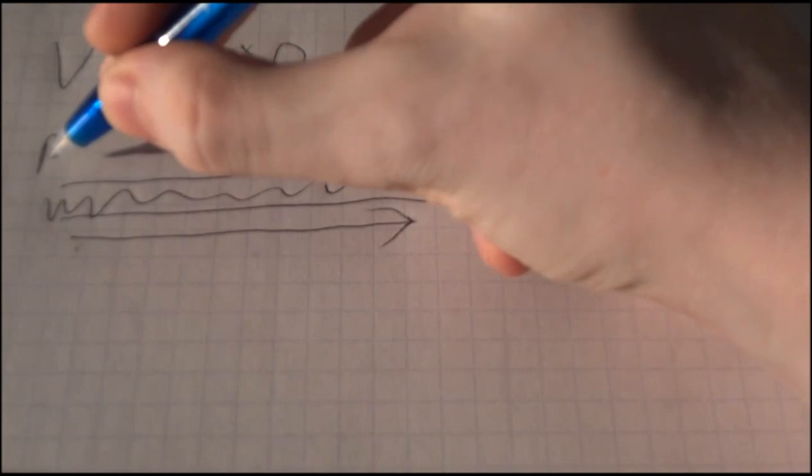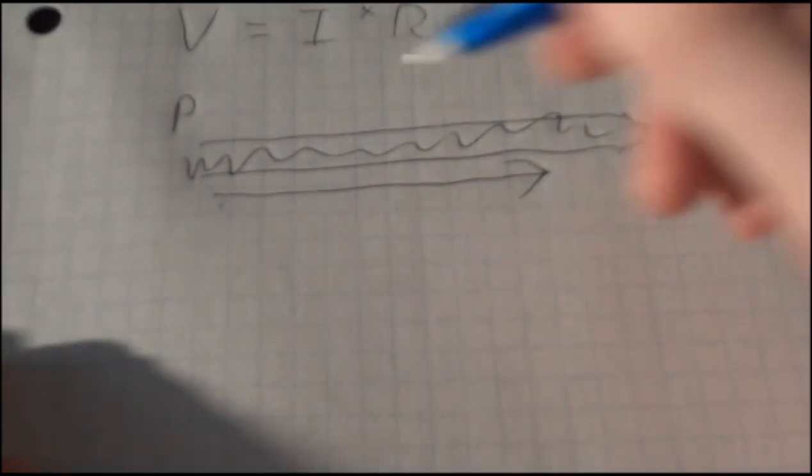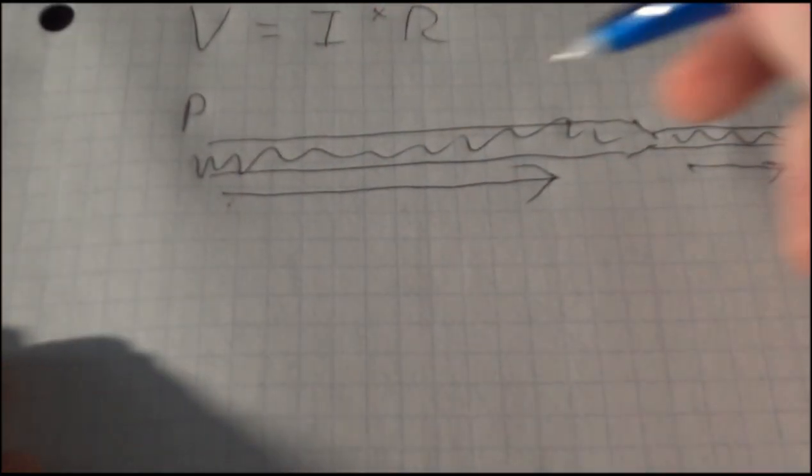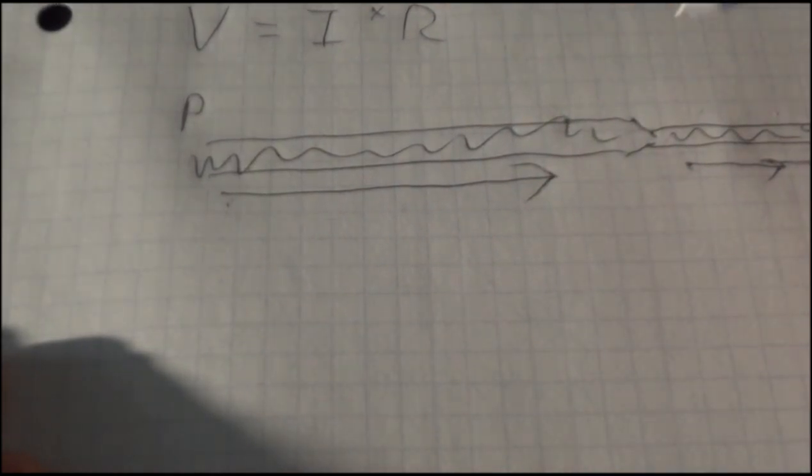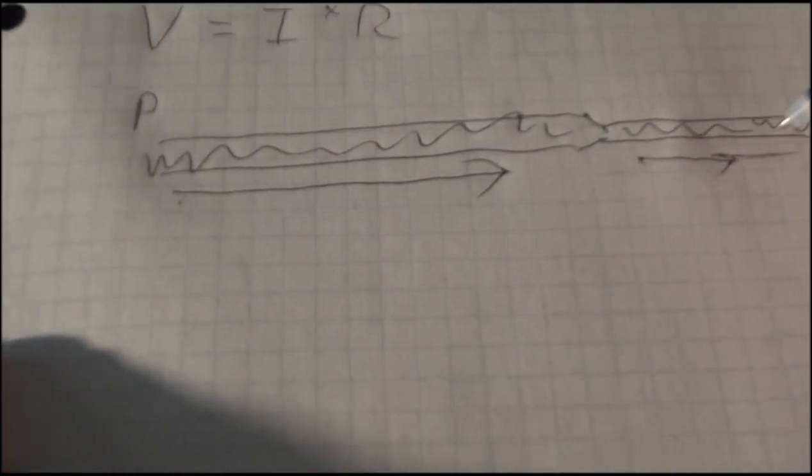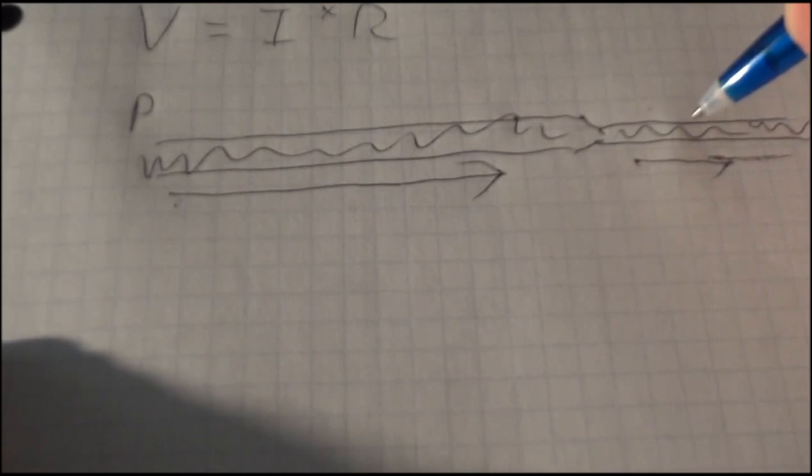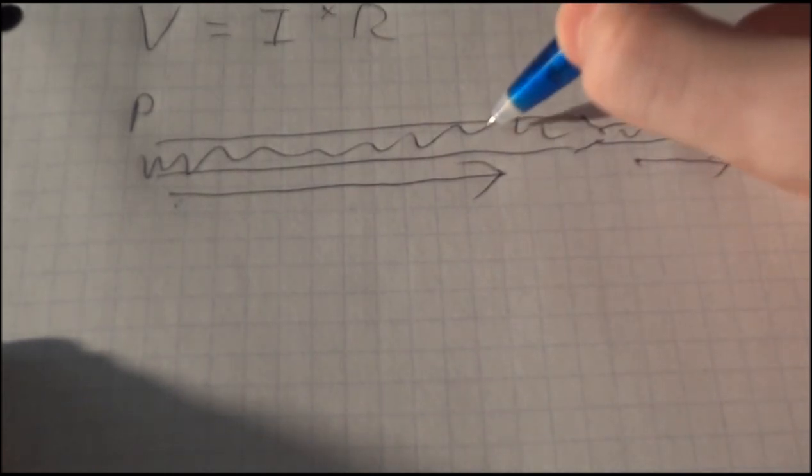So again, water pressure, the force that pushes the water through, is what we consider to look like voltage. The flow going through this hose is what we would look at as the current. And then resistance would be if we had a smaller diameter hose versus a larger diameter hose.